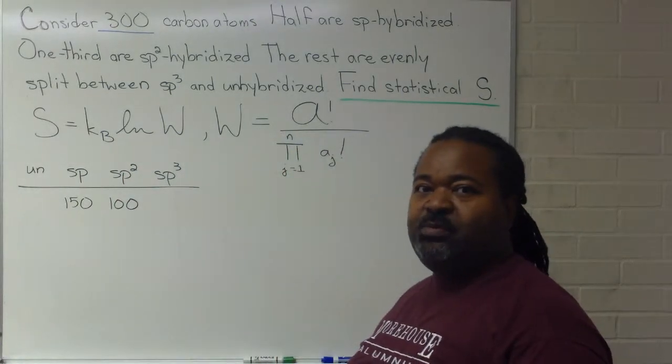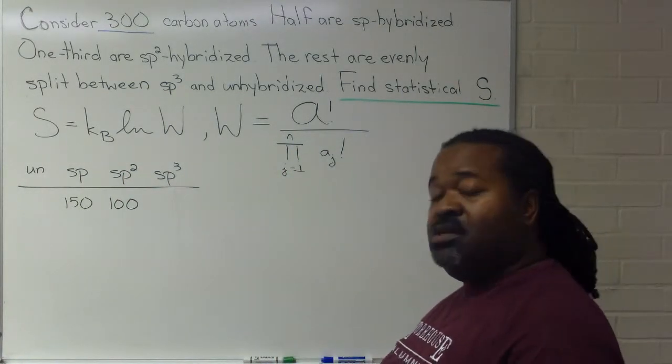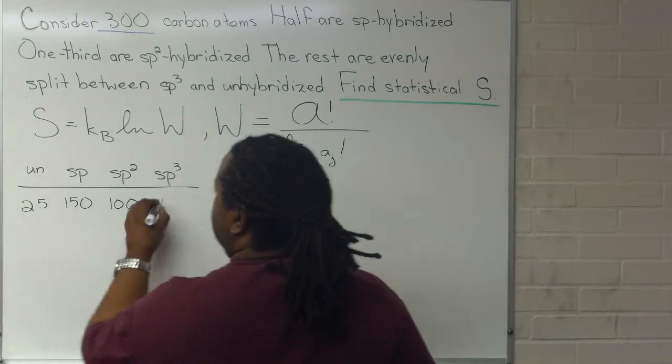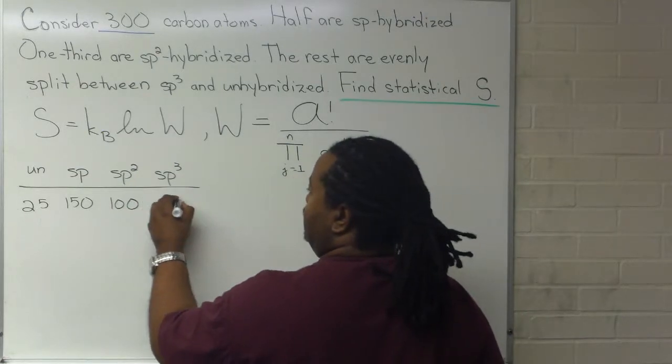This leaves us with 50 particles remaining, so those 50 carbon atoms are split evenly between the unhybridized and the SP-3 hybridized.